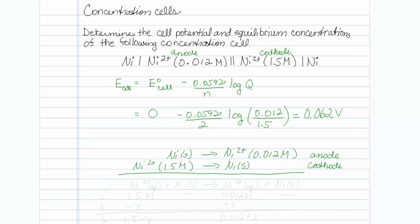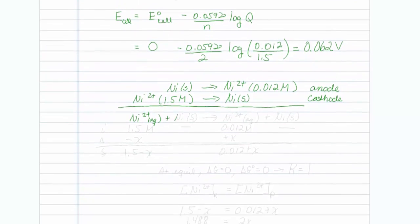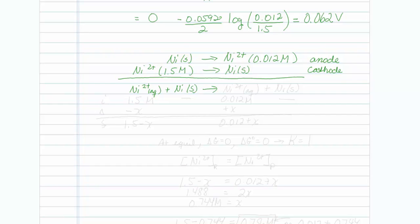The next question asks us what are the equilibrium concentrations of these things. For fun, let's just get ourselves a reaction table. Nickel 2 plus aqueous plus nickel is going to another nickel 2 plus aqueous plus nickel solid. This is initially 1.5 molar. This is 0.012 molar.